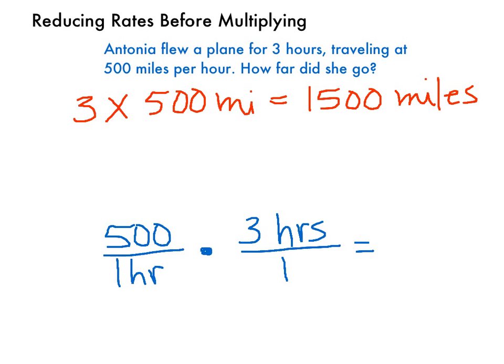But we can see the equation down below here. She traveled 500 miles per hour times 3 hours. The unit hours appears above and below the division lines. We can cancel those out and then do the multiplication. 500 times 3 equals 1,500 miles.